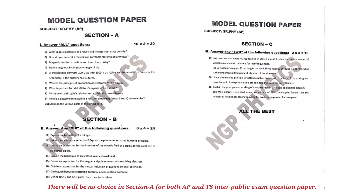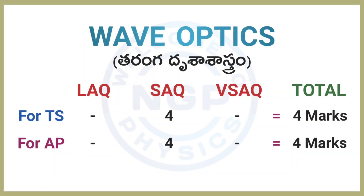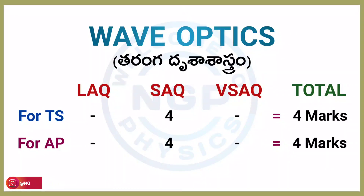Next, third chapter: Wave Optics. For both TS and AP students, one 4-marks question is there. Chapter weightage is 4 marks.